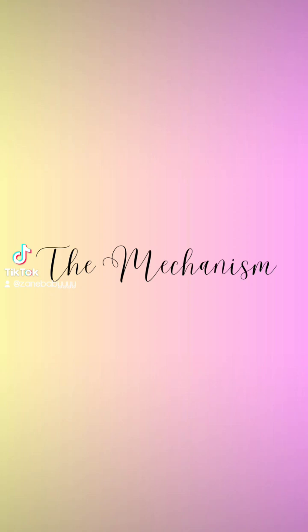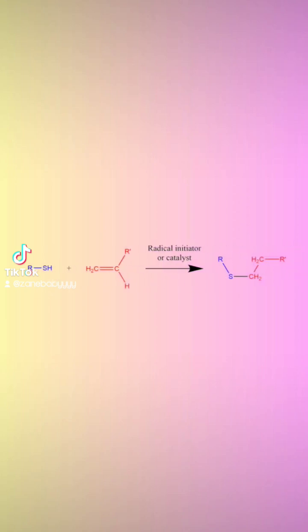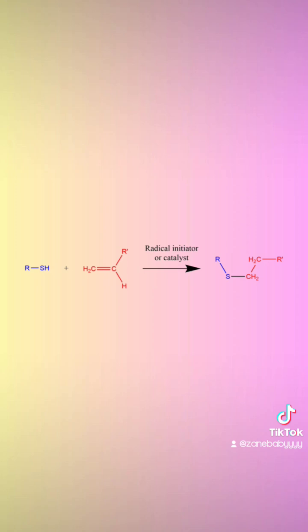In the first step, an initiated radical is transferred onto the thiol, creating a thiyl radical that adds across the carbon-carbon double bond. Then the carbon radical undergoes a quick chain transfer to a new thiol, creating a new thiyl radical.